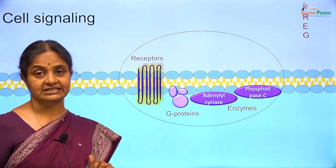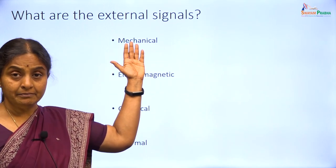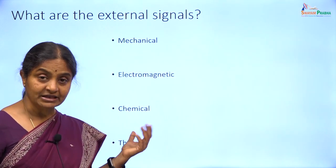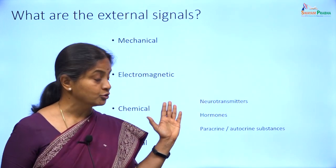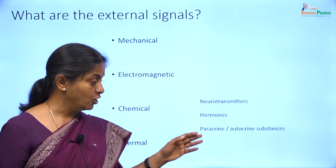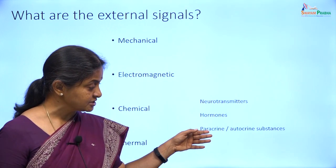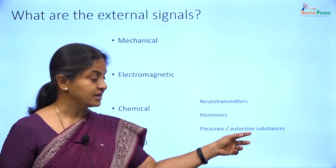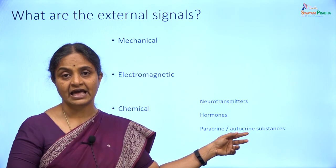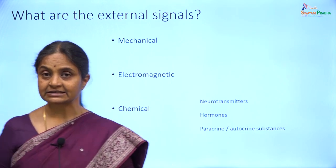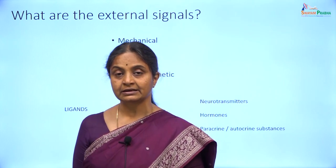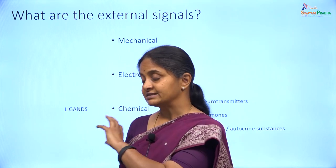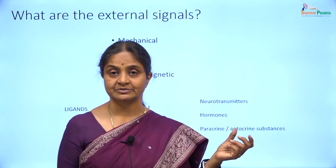What are these external signals like? They can be mechanical signals such as touch and pressure, electromagnetic signals like light, or chemical signals. We understand chemical signals a lot better. We can have neurotransmitters, hormones acting on a cell, or paracrine and autocrine substances. Paracrine substances are released in the vicinity of a cell by neighboring cells and then act on a target cell. Autocrine substances are released by the cell itself and act on that very same cell. All these chemical signals are collectively called ligands. In this module, we will focus on how ligands act on a cell, covering most of the signal transduction mechanisms we need to learn about.